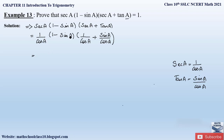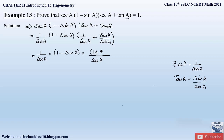So we have 1 by cos A into (1 minus sin A). Now you can notice that cos A and cos A are the same in the denominator, so we write the common denominator as cos A and add the numerators. This gives us 1 by cos A into (1 minus sin A) into (1 plus sin A) over cos A.